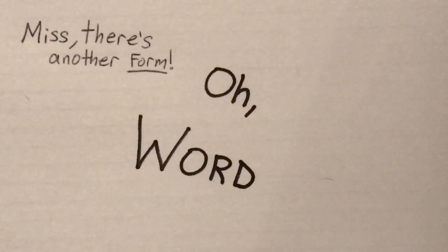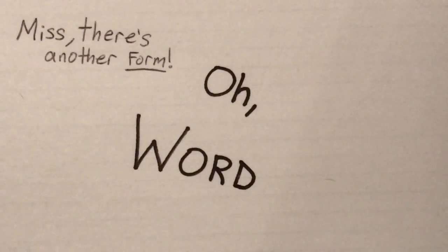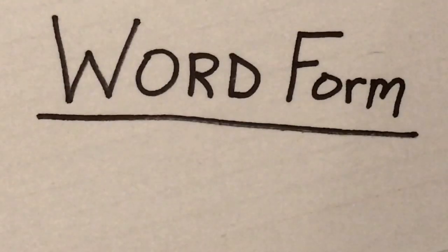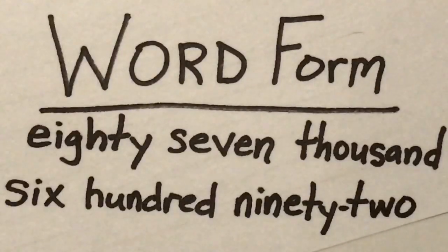But miss, there is another form. Oh, you're right. There is another form. Word form. We've talked about standard form and expanded form. Now let's talk about word form. This is when you use the letters of the alphabet to write out the numbers as a word form.